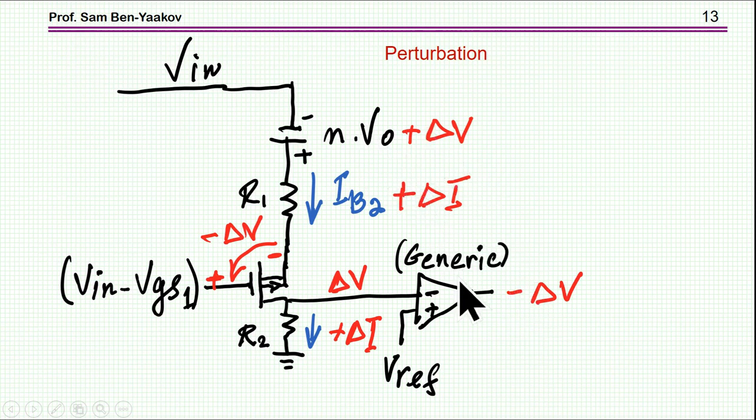And this will, in turn, assuming a stabilized system, which will eventually bring delta V to zero until this system is stabilized again. So this is the basic operation of this sampling amplifier.